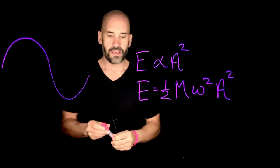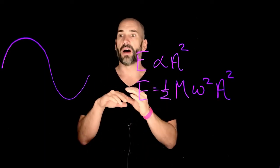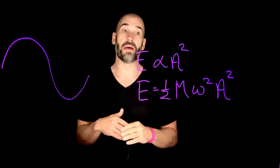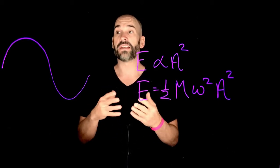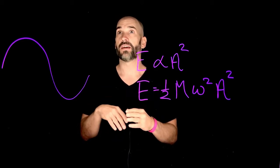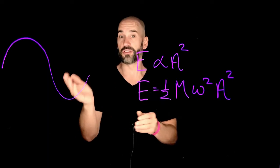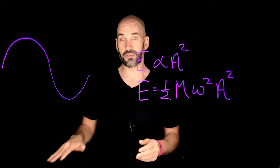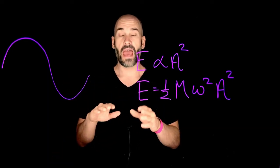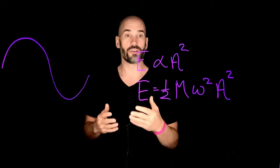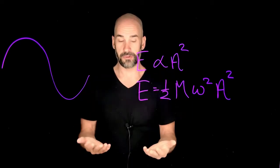The big takeaway that I want you to recall from this — and that might show up on the MCAT — is that really for physical waves, such as a wave on a string or a slinky, the energy of that wave is proportional to the square of its amplitude.